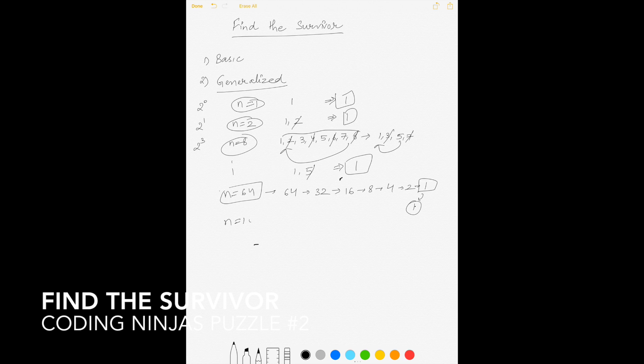But we need to solve it for n equal to 100. 100 is not of the order of 2 as we can see. So when there will be 64 survivors, the case will be similar to the one we discussed above. When there are 64 survivors, the person who will have the sword initially will be the survivor ultimately.